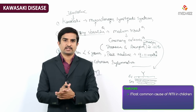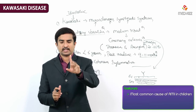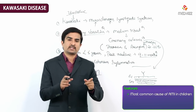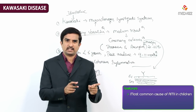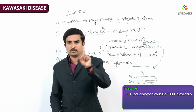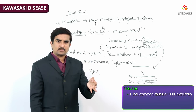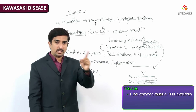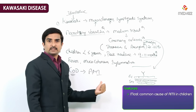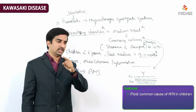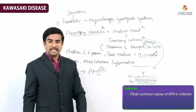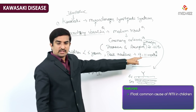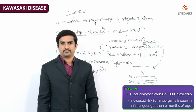In exam questions, if asked what is the most common vasculitis in children, the answer is IgA vasculitis. But if asked which vasculitis causes high mortality or leads to acute myocardial infarction in children, the answer should be Kawasaki disease. Kawasaki disease is the most common cause of acute myocardial infarction in children, and the leading cause of death is ischemic heart disease due to thrombosis and aneurysm rupture.